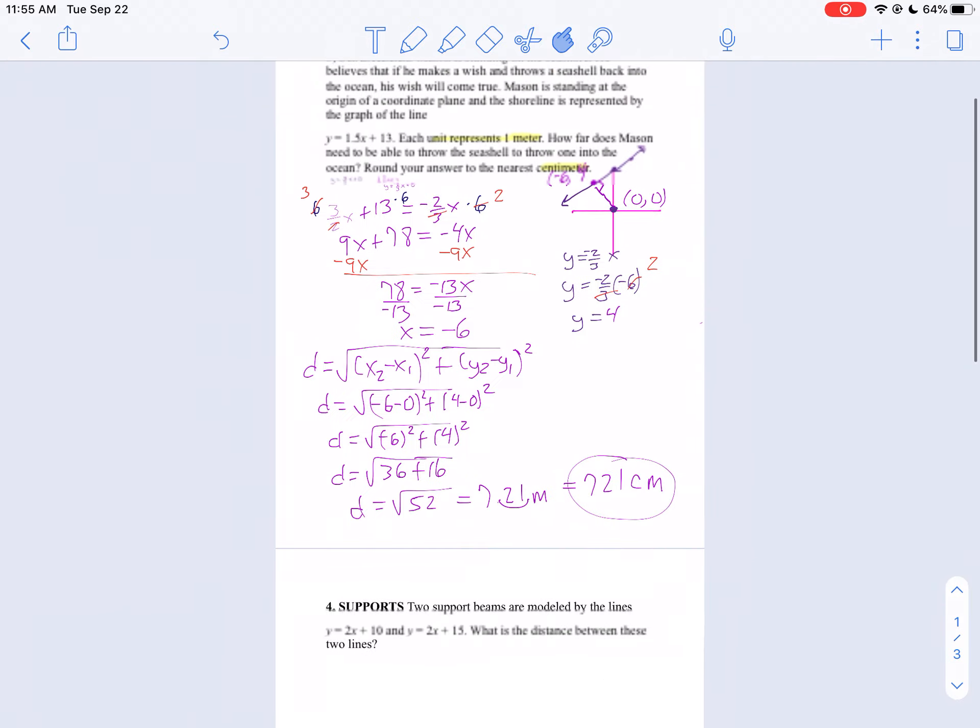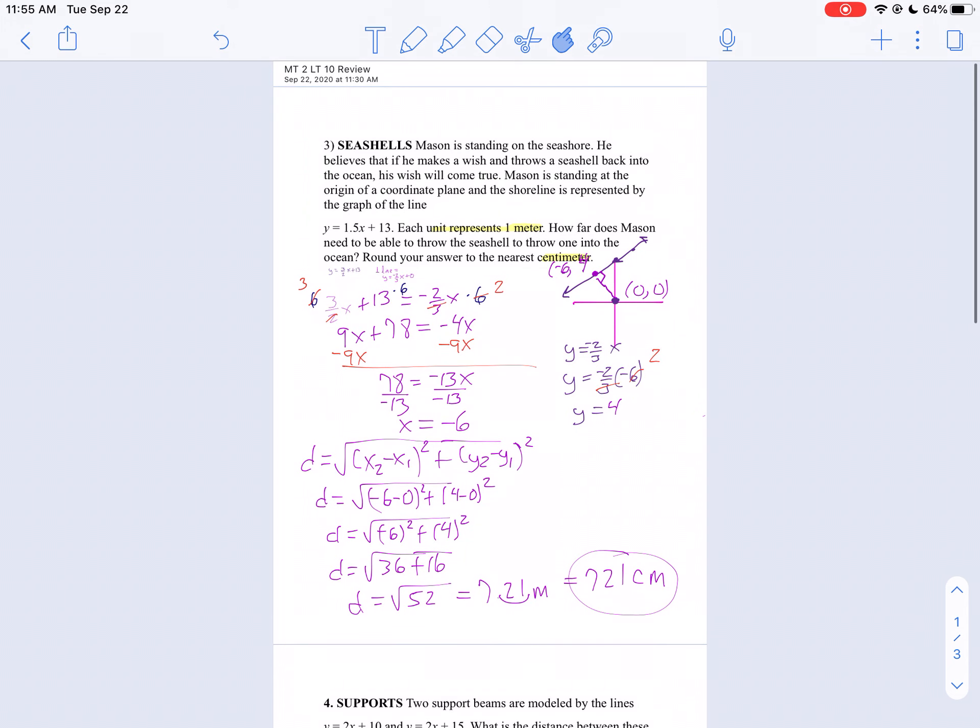The important thing to remember is when you're finding the distance between a point and a line, it must be the perpendicular distance. So you're going to have to find the equation of the line connecting those points and then use your distance formula.